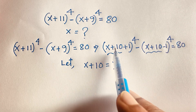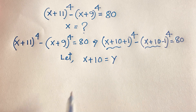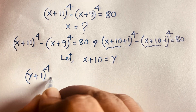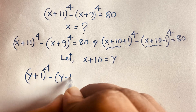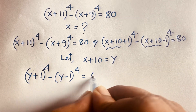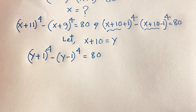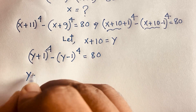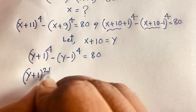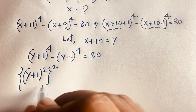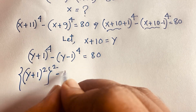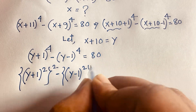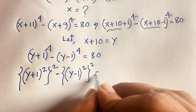If I substitute y into the equation, it becomes (y + 1)⁴ − (y − 1)⁴ = 80. I can rewrite the fourth powers as squares of squares: (y + 1)² whole squared minus (y − 1)² whole squared is equal to 80, using the exponential law that 2 × 2 = 4.